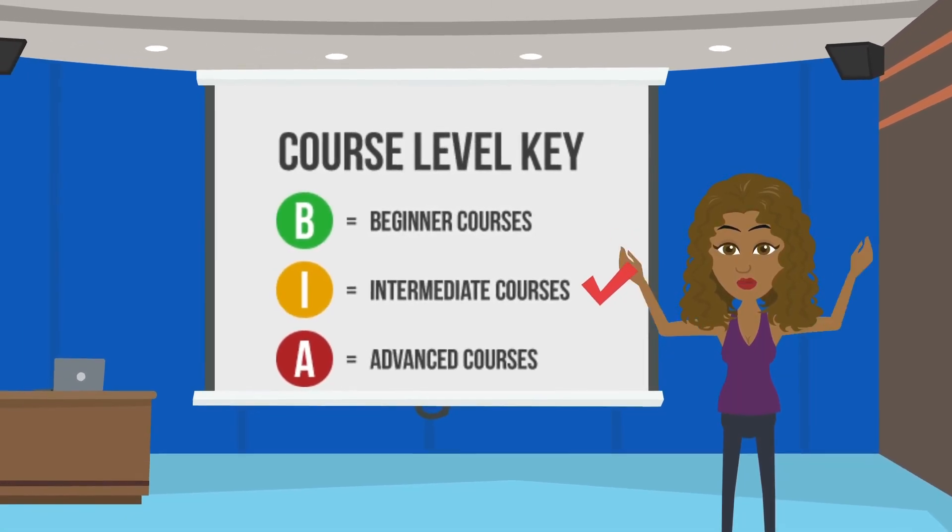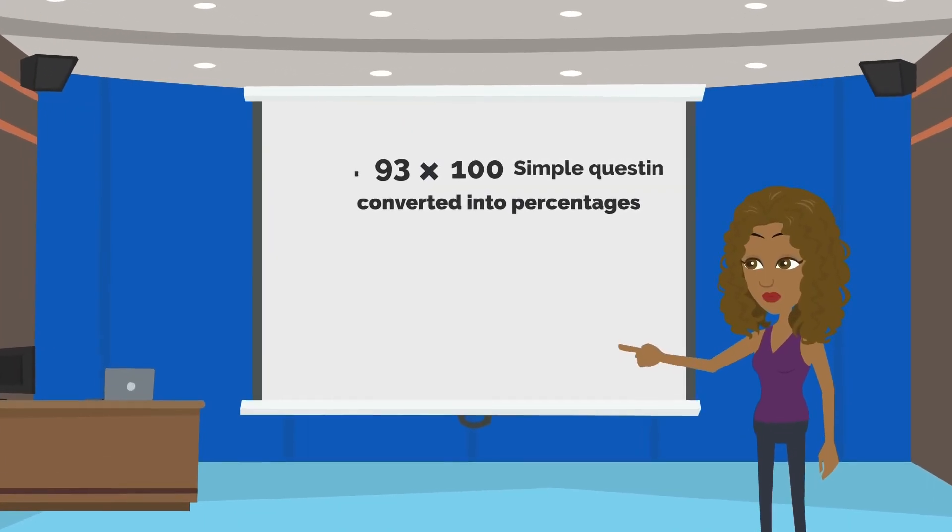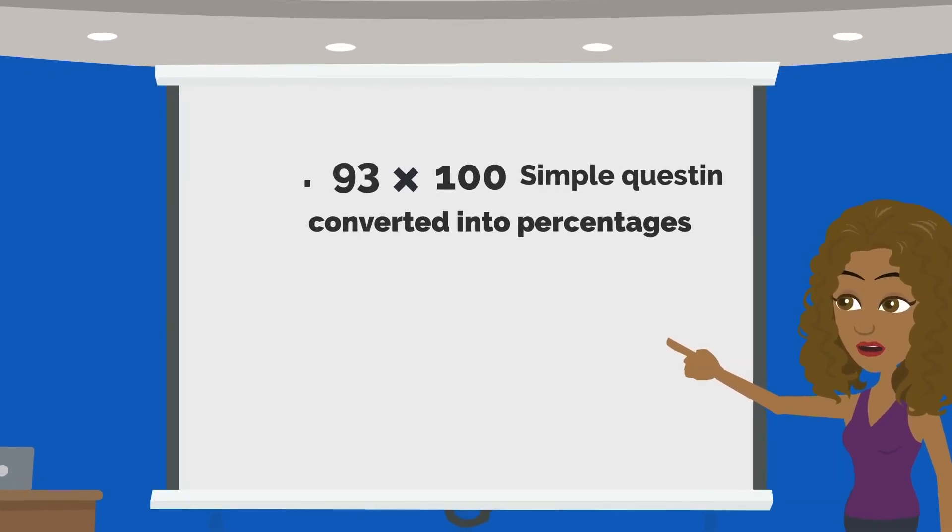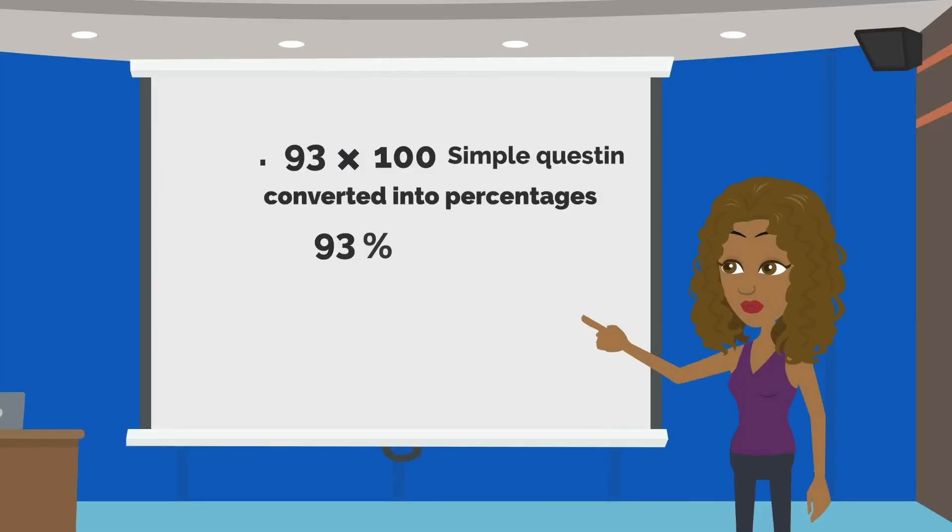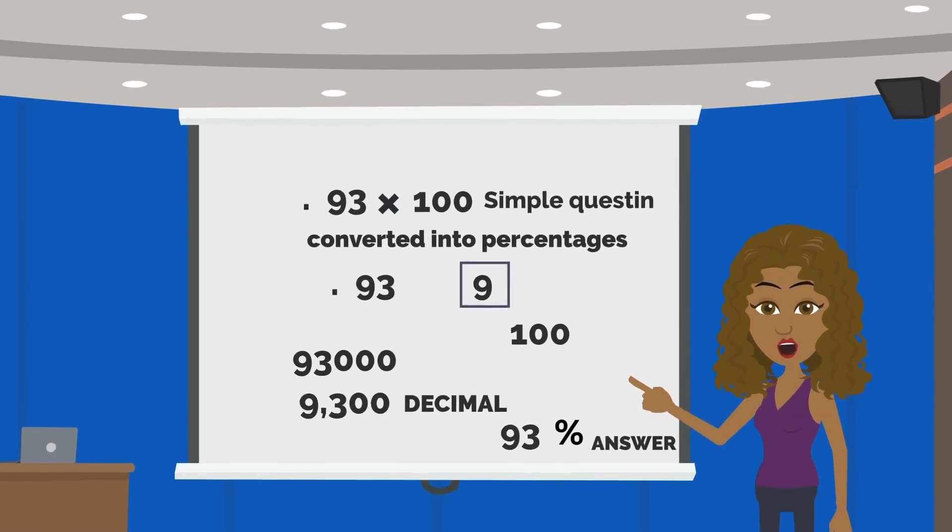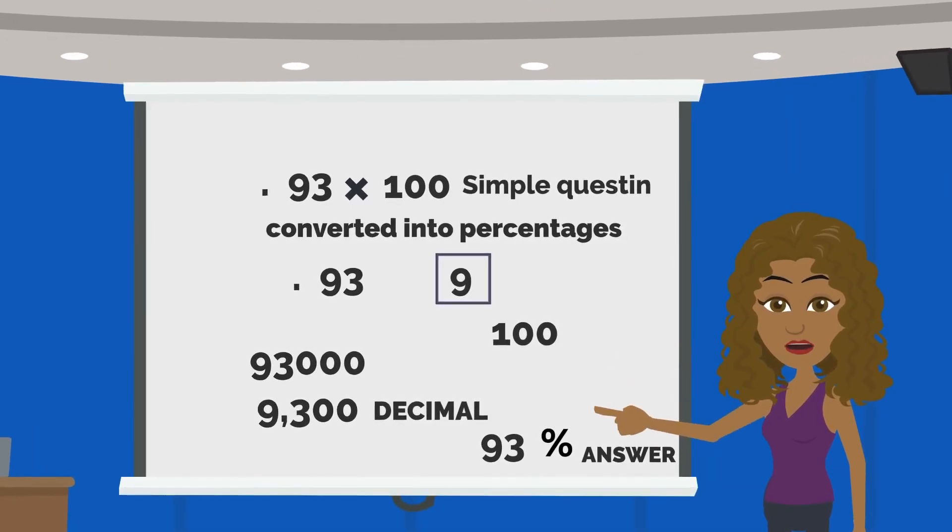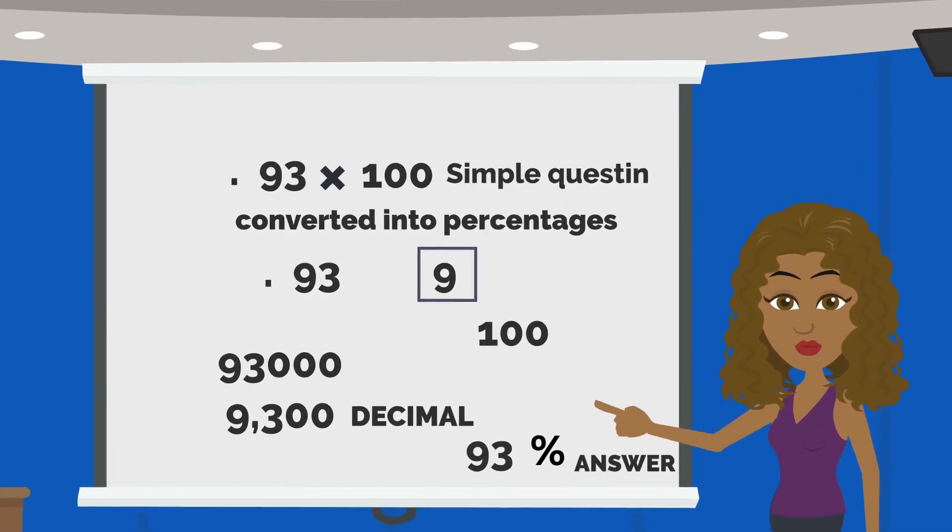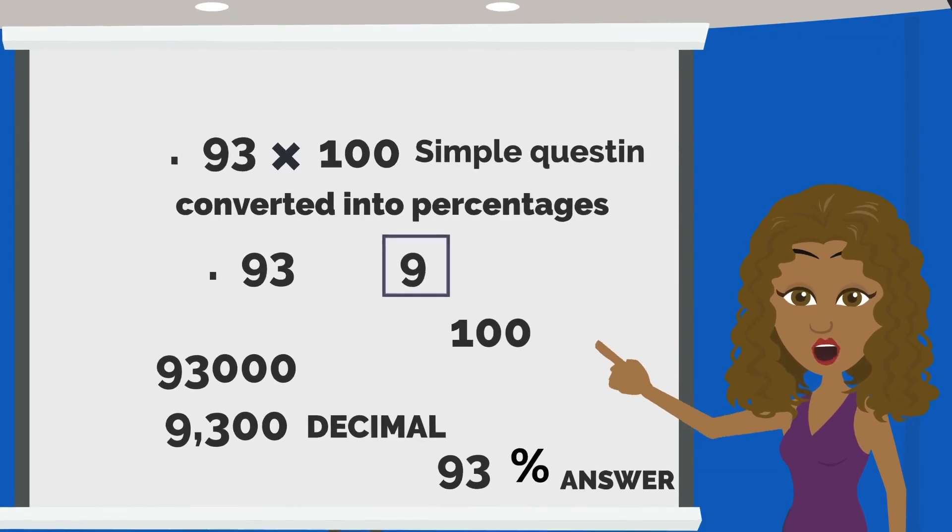So the first question here is 0.93 times 100. We're going to look at this very closely. It's a simple question but we're going to convert it so it can be into percentages. We're going to look at 0.93. What place is the nine in? You're correct, it's in the tenth place. What place is the three in? You're correct again, the hundredths place. So we're going to times it by 100. We're going to get 9,300. We're going to move that decimal place two places to the right and it comes out to 93 percent. This is your answer to the first question. How simple was that?